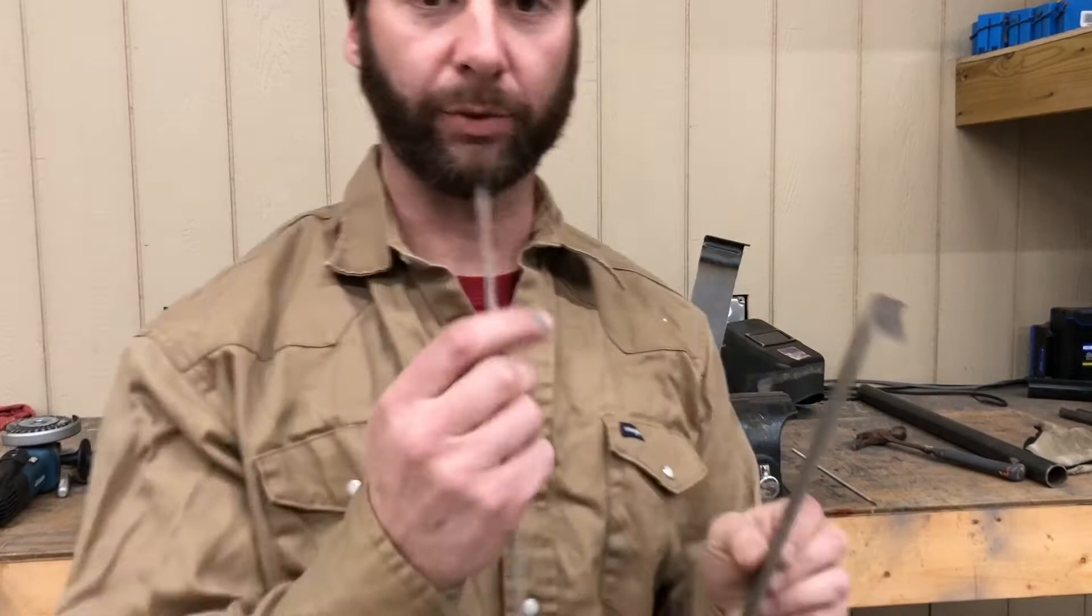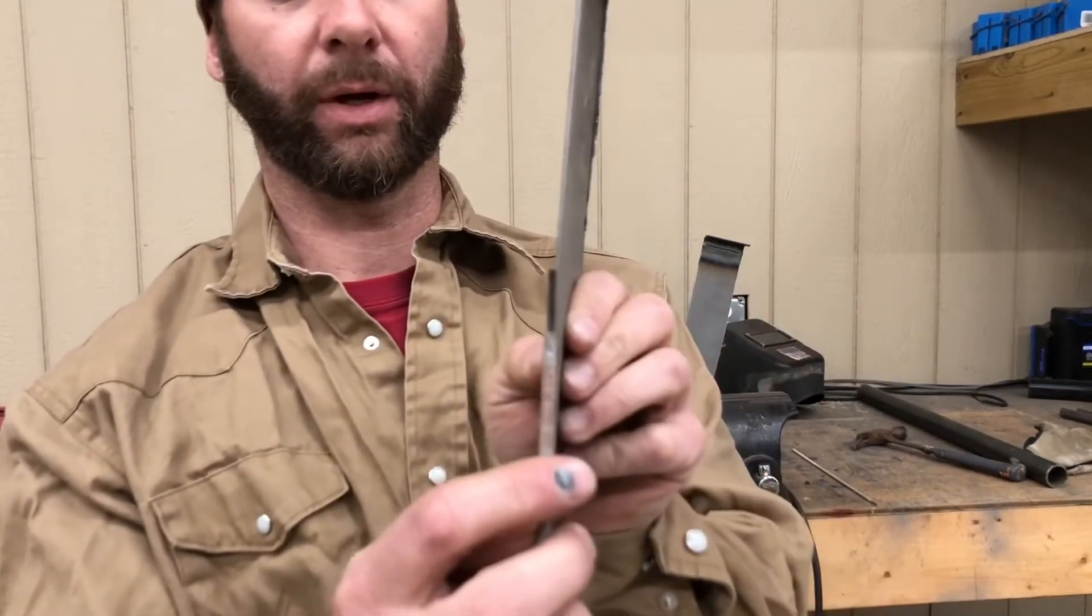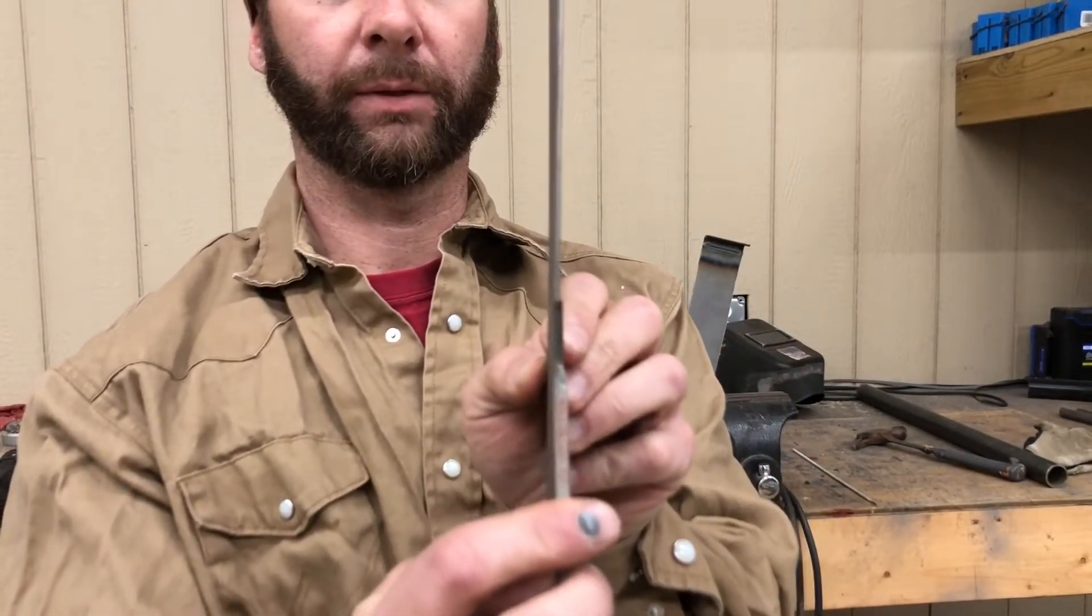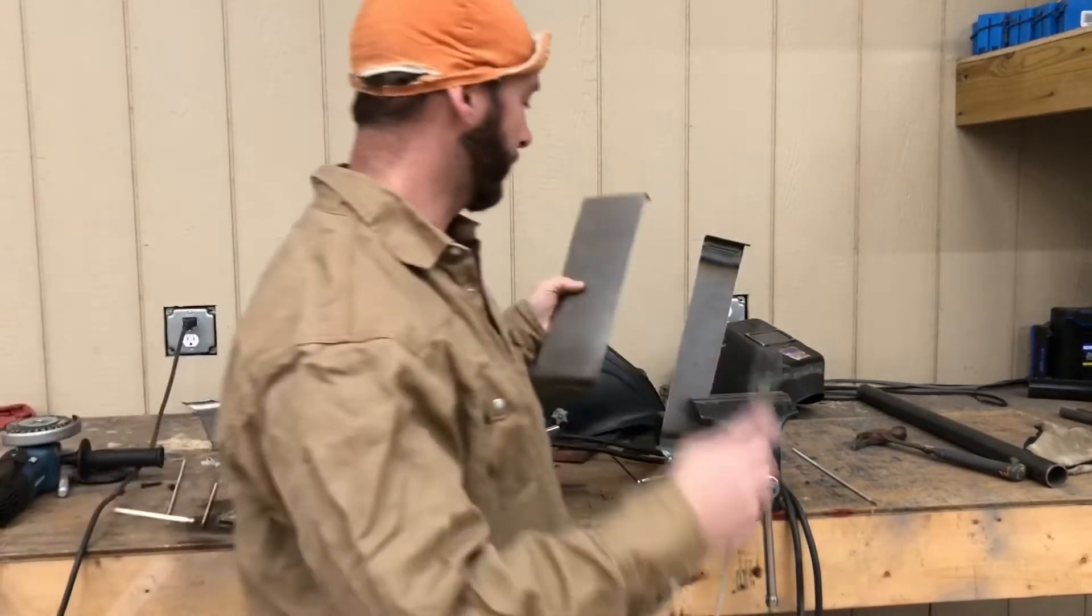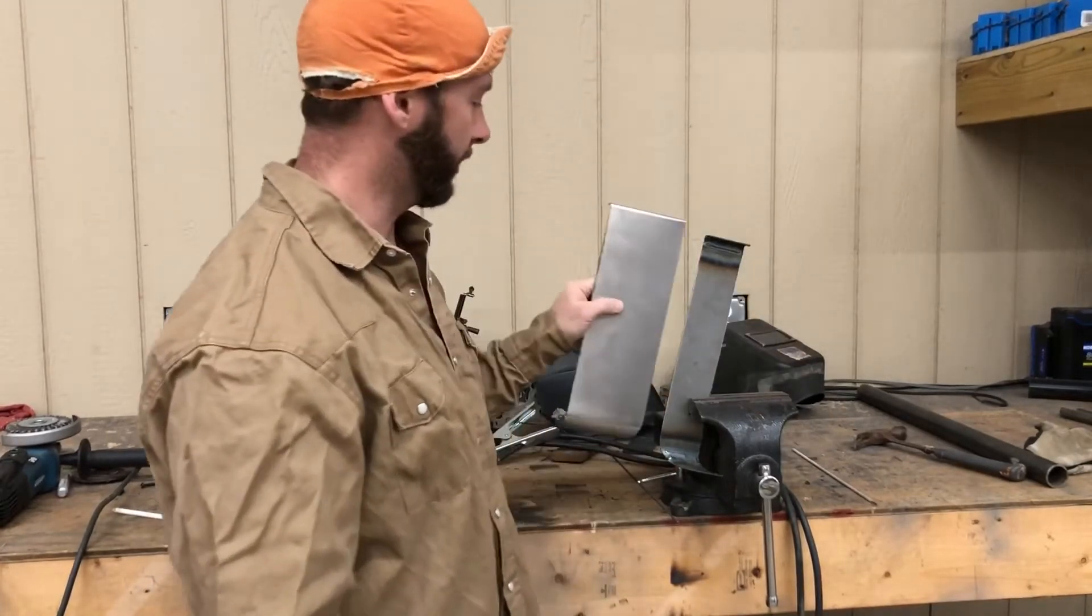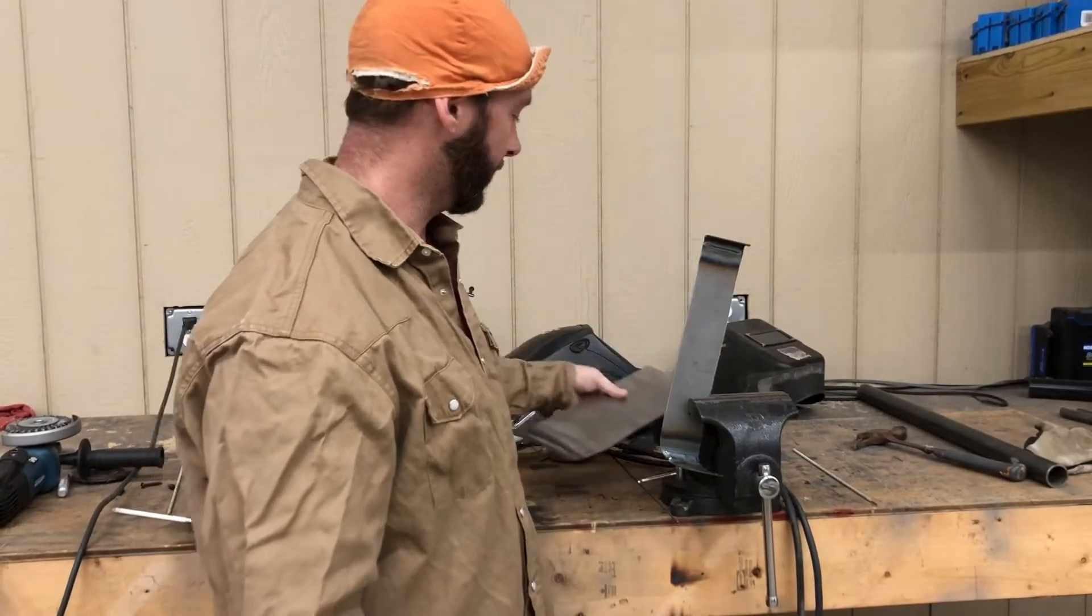This is a 3/32 7018 rod, and if you can tell, the metal is just a little bit thinner than the rod - pretty thin stuff. I'm going to put these two pieces in my vise here and see if I can run a vertical downhill for you.